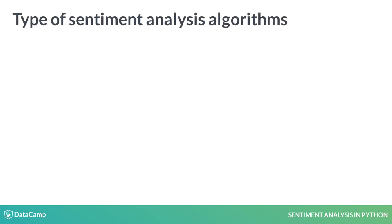The algorithms used for sentiment analysis could be split into two main categories. The first is rule or lexicon-based. Such methods most commonly have a predefined list of words with a valence score. For example, 'nice' could be plus two, 'good' plus one, 'terrible' minus three, and so on. The algorithm then matches the words from the lexicon to the words in the text and either sums or averages the scores in some way.